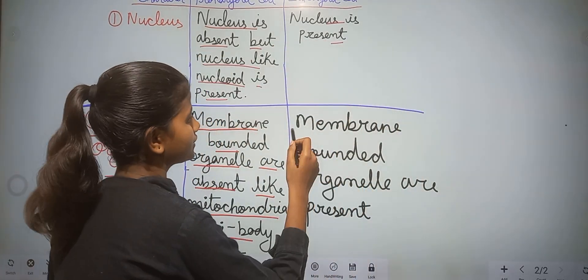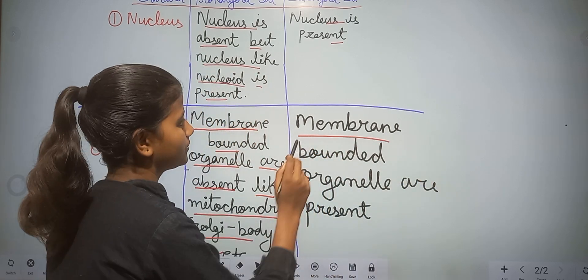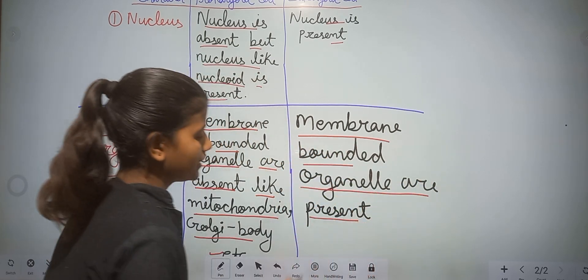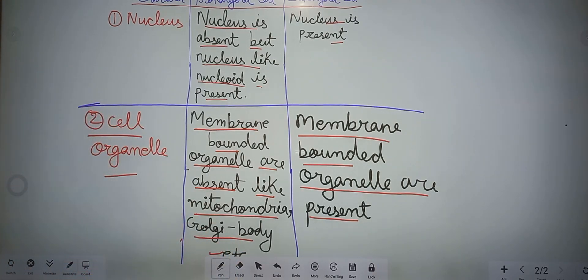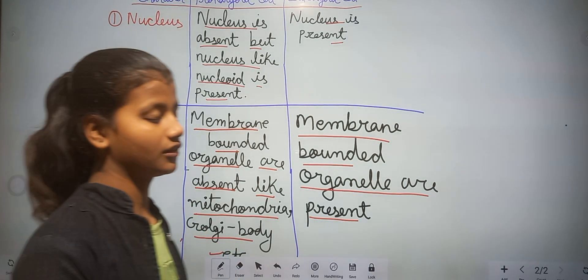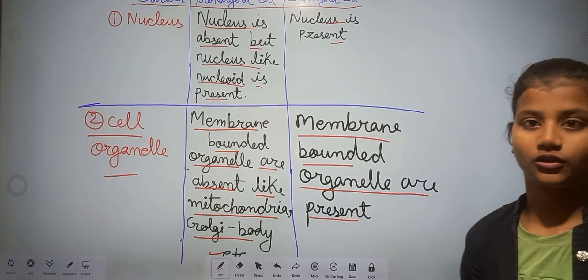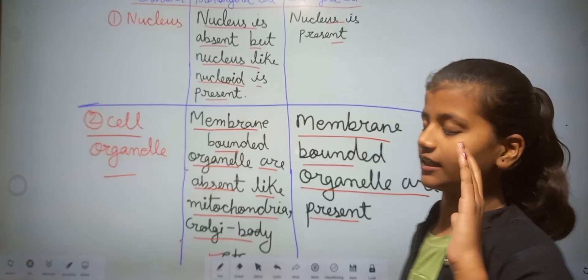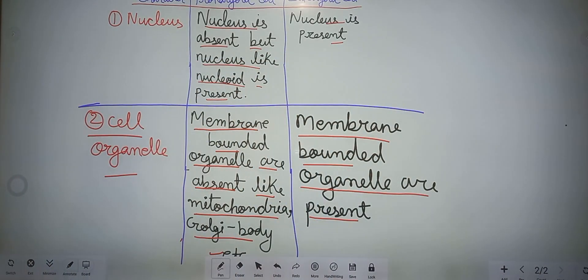In eukaryotic cell, membrane-bounded organelles are present — like mitochondria, golgi body, lysosome, endoplasmic reticulum, and so on. These are absent in prokaryotic cell.